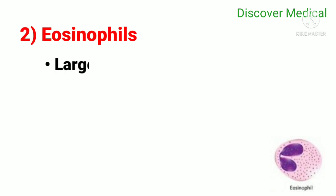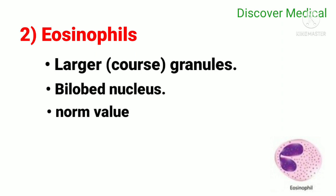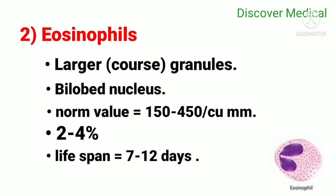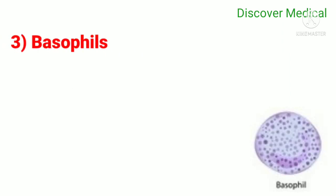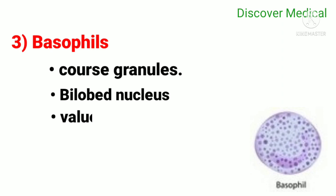Eosinophils have larger granules and a bi-lobed nucleus. The normal value is 150 to 450 per cubic millimeter, two to four percent, and the lifespan is seven to twelve days. Basophils have coarse (large) granules and a bi-lobed nucleus.